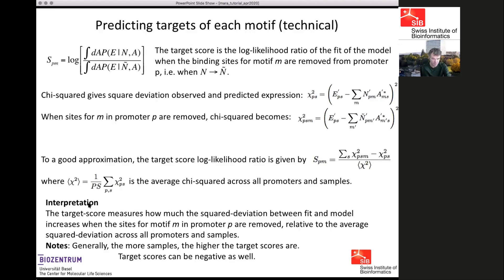The target score measures how much the squared deviation between fit and model increases when sites for motif M in promoter P are removed, relative to the average squared deviation across all promoters and samples. This quantity is extensive in the number of samples — the more samples you have, the higher the target scores tend to be, and the more accurately we can identify targets. The target score can also be negative, meaning the fit may actually be better when you remove the site.